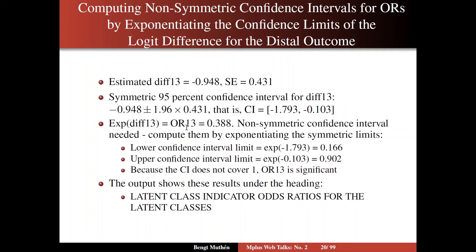The non-symmetric confidence interval is then computed by exponentiating the limits, the exponentiated lower limit of the logit difference and the upper limit. So the confidence limits will be these two values. We see that that doesn't cover 1. Therefore, the value 0.388 is considered significant. So the odds ratio that is the influence of the latent class variable on the binary distal outcome is significant.